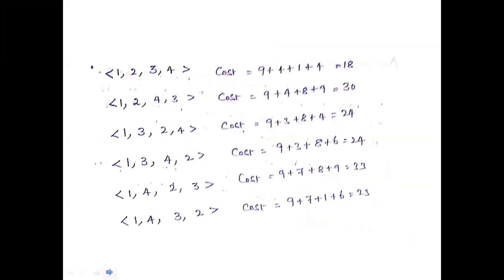So if we assign jobs in that manner, the total cost is 9 + 4 + 1 + 4 = 18. That is our cost for the first combination.